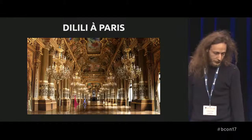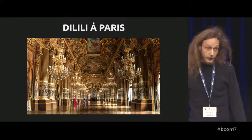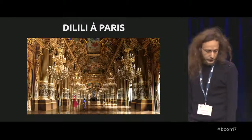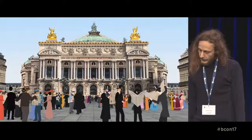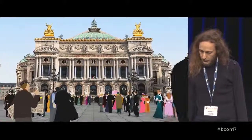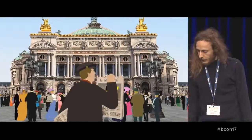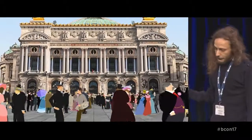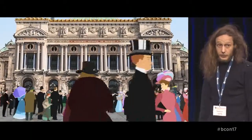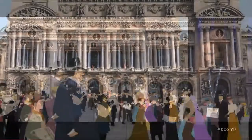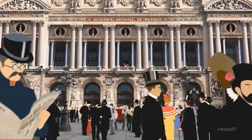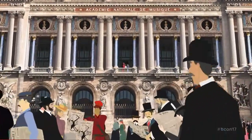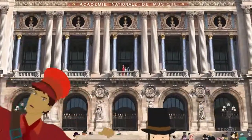Here is another image where we can see the Paris Opera. These are the main characters. This is the first shot that we made, jumping straight into it. All of these characters were animated in Blender. There are many of them — it is a big shot, and it was kind of complicated to put it all together, but it works.